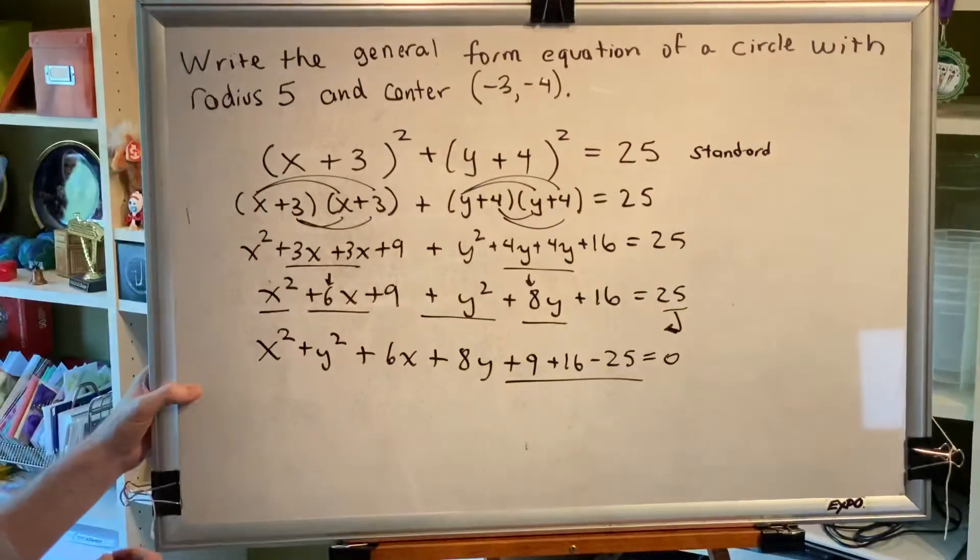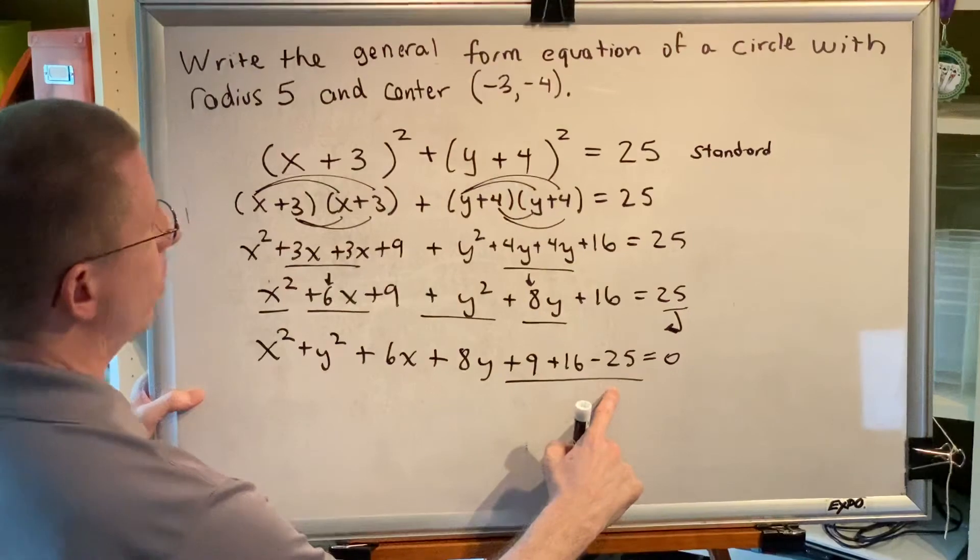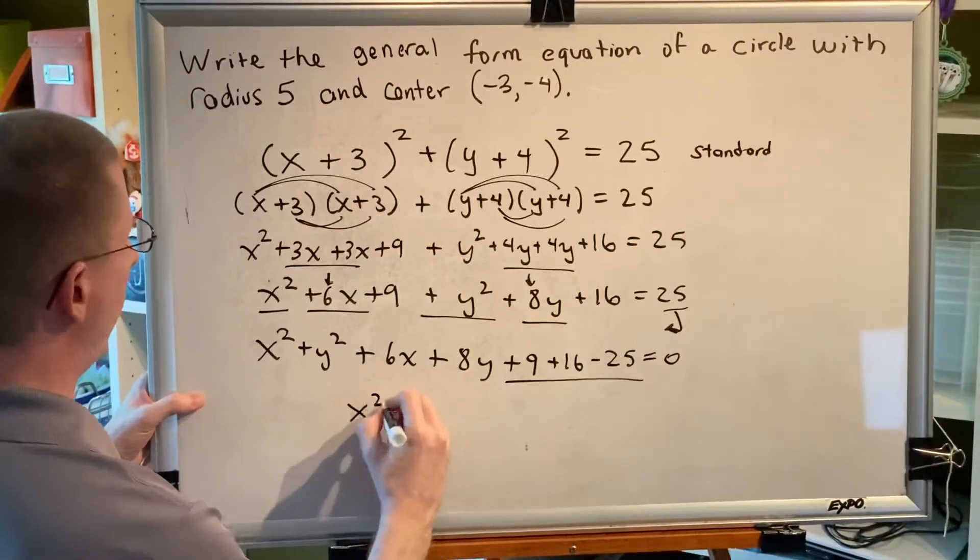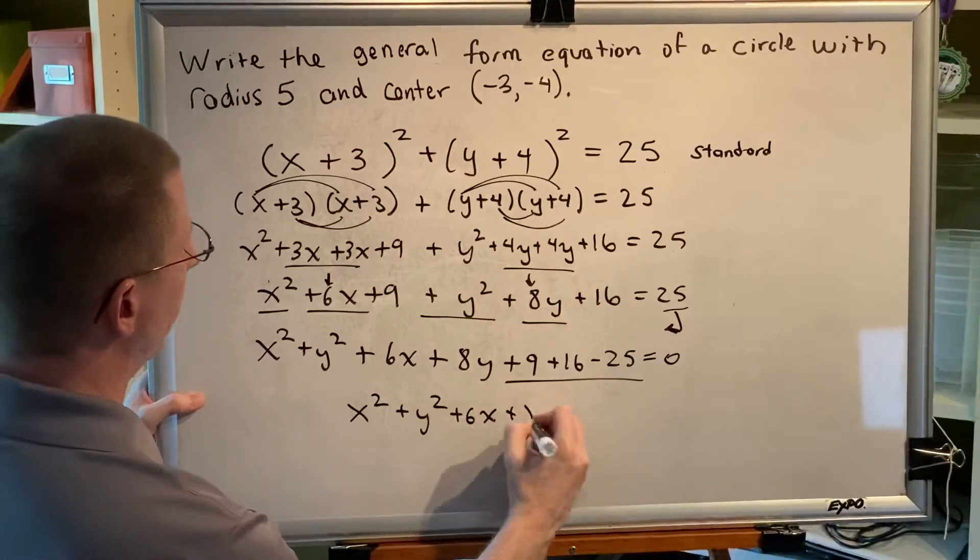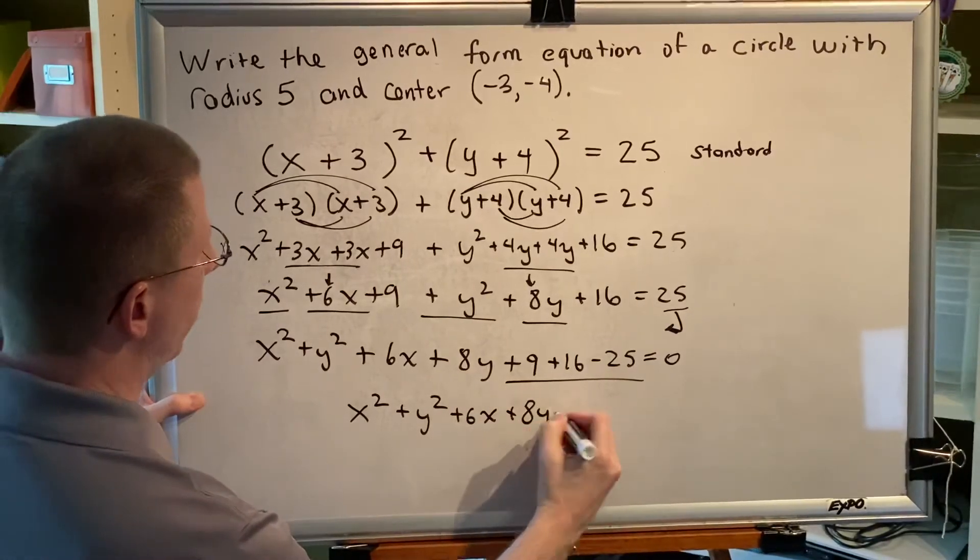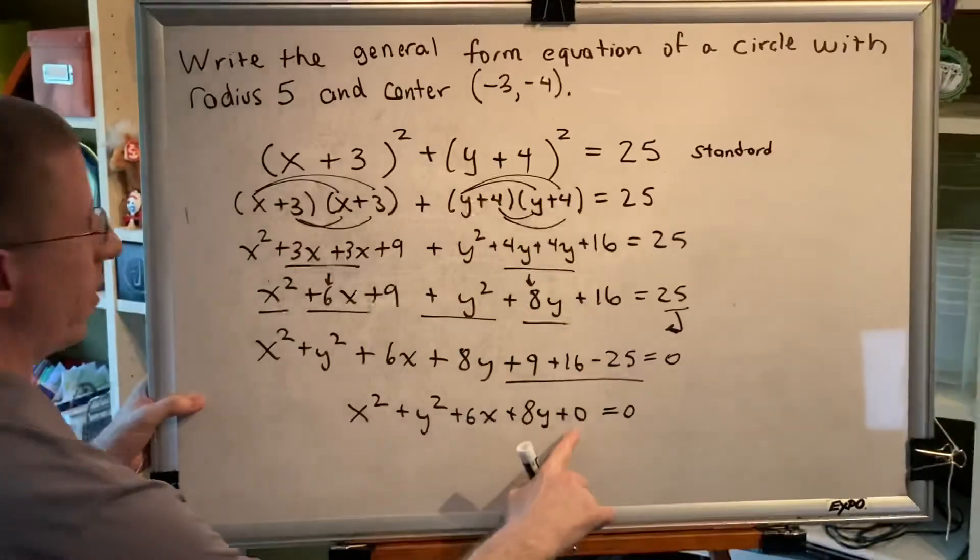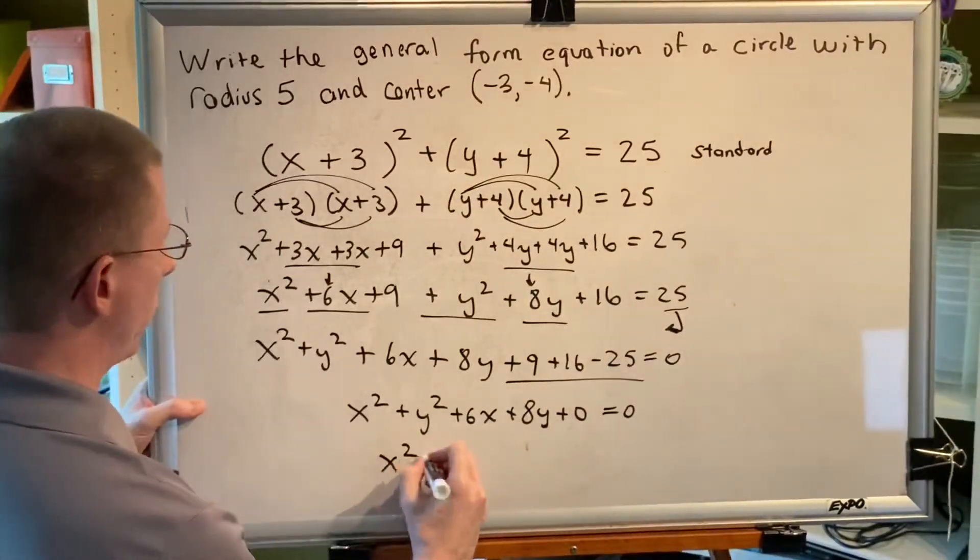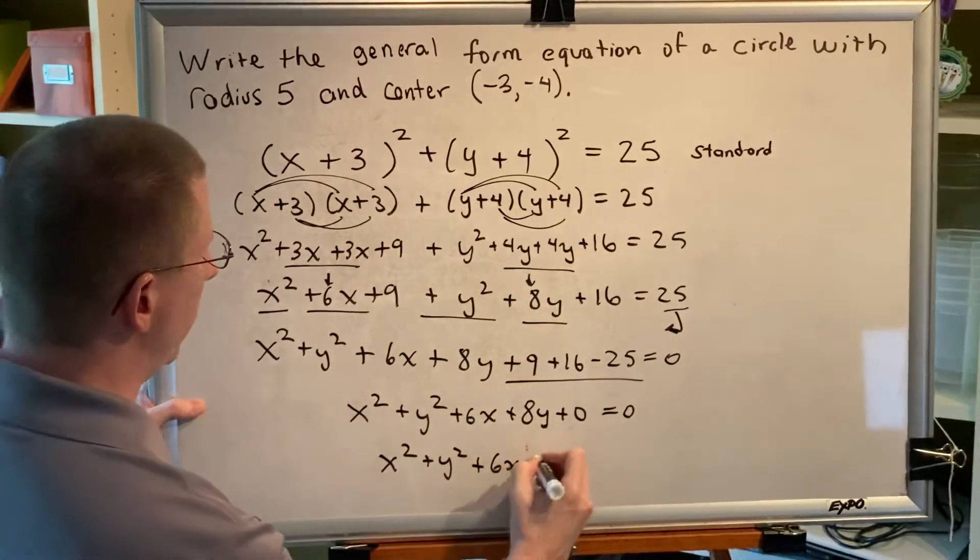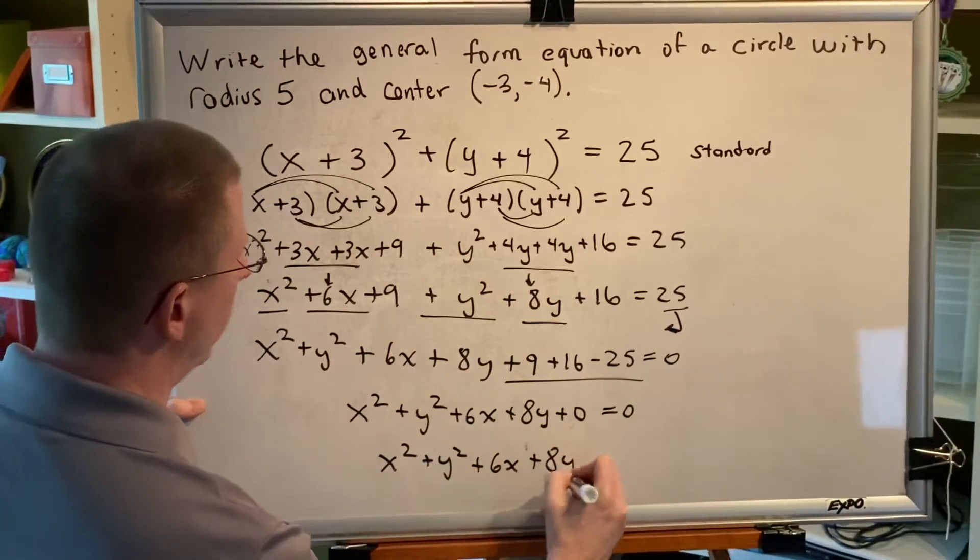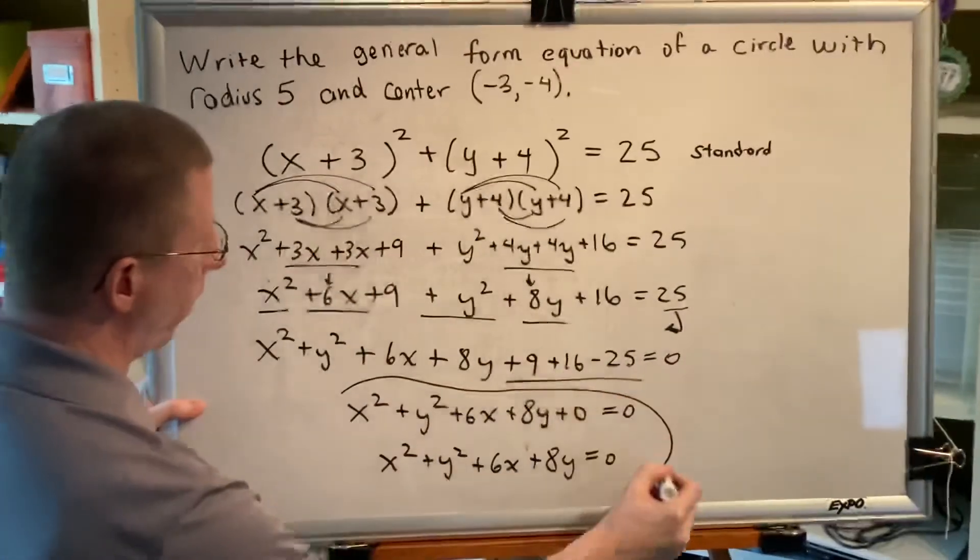Now I just have to put all these numbers together. Well, 9 plus 16 is 25, minus 25 is 0. So I get x² + y² + 6x + 8y + 0 = 0. It is not necessary to write this plus 0. So simplifying we get x² + y² + 6x + 8y = 0. Both of these are an acceptable final answer.